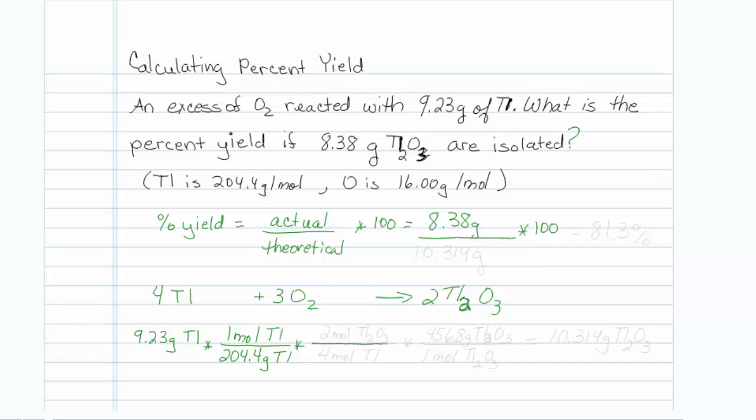Job number 2 is to look at the balanced reaction and realize that there are 4 moles of thallium for every 2 moles of thallium 2 O3.